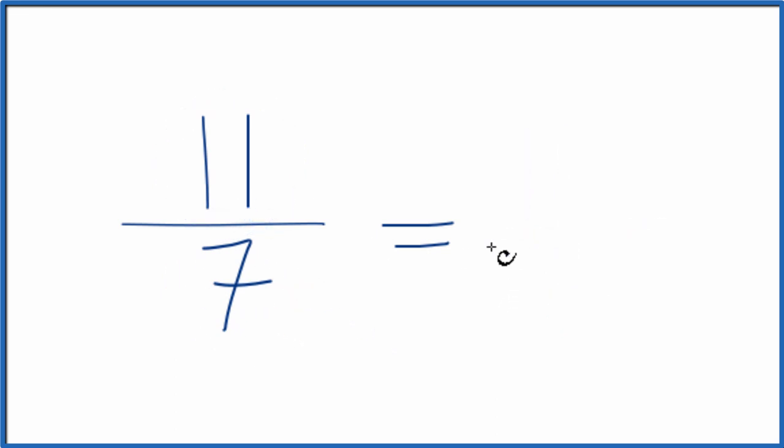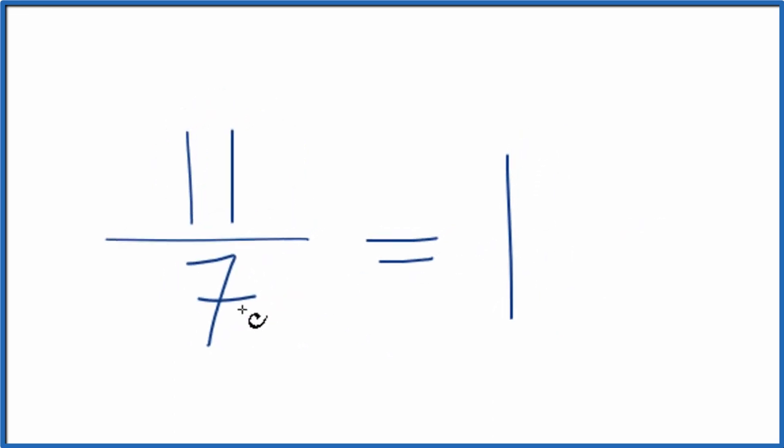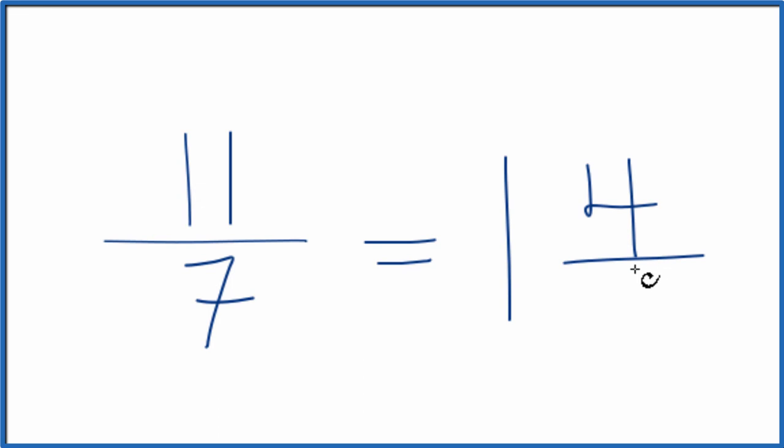So 7 will go into 11 one time. 1 times 7, that's 7, and then we have 4 left over. So we end up with 1 and 4 over, bring the denominator across, 7.